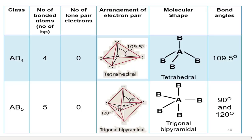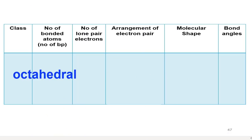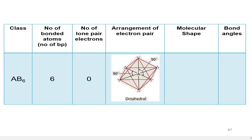The next shape is octahedral. The class is AB6, meaning there are six electron pairs around the central atom. They arrange as far apart as possible to minimize repulsions, so the bond angle is 90°.